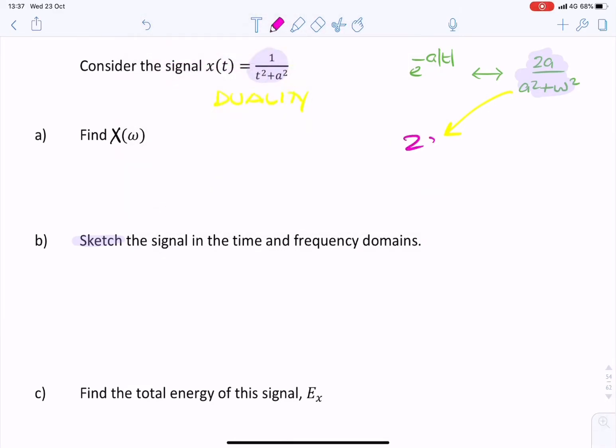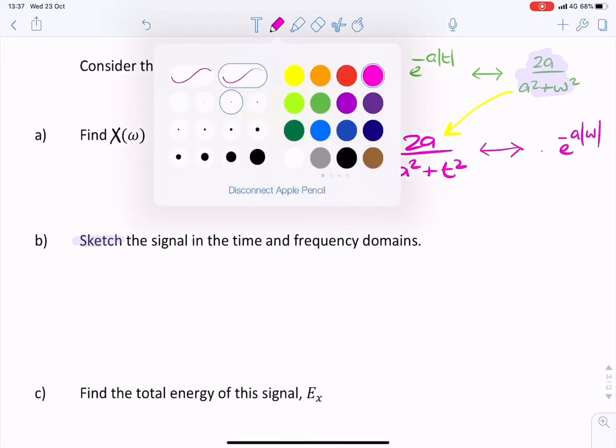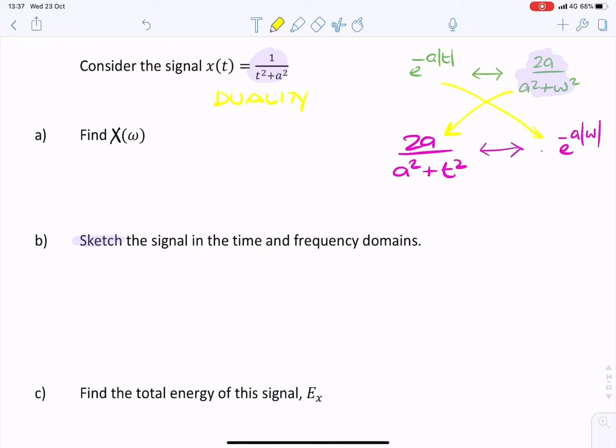The corresponding spectrum would be e to the minus a absolute value of omega. So all we've done is we've changed time and frequency. We're allowed to do that. The only thing we need to remember is to insert a factor of 2π and then a little minus sign that is lost with the absolute value in this question.